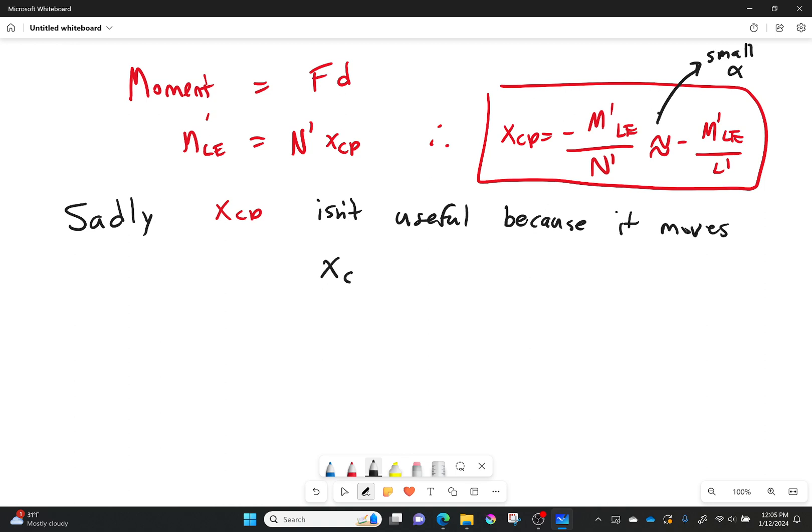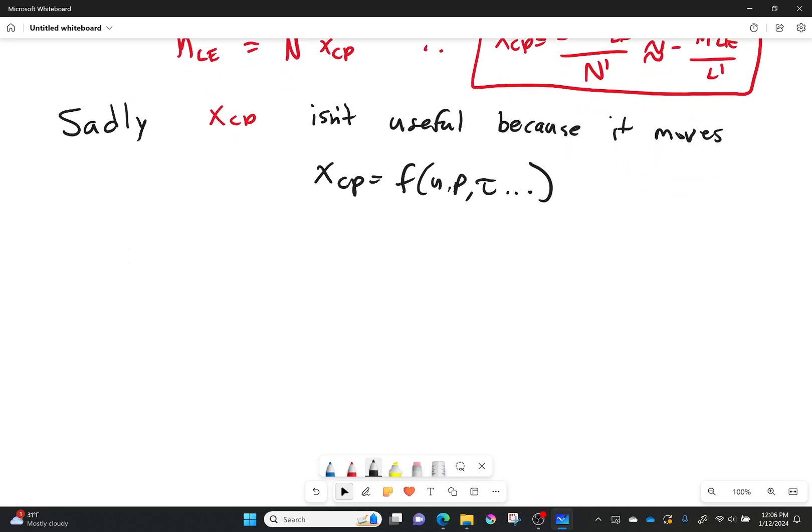So xcp is equal to a function of a lot of things, like velocity and pressure and the shear stress and everything else that can come in there that can cause slight differences in the pressure distribution and the forces. And you're like, okay, well how do I find airflow performance if all this stuff can change?